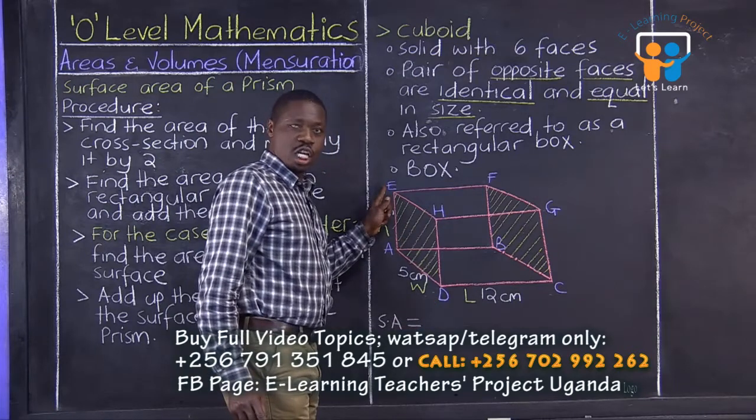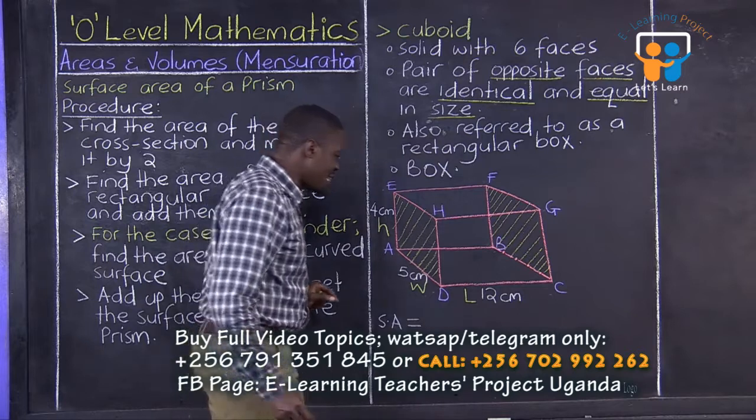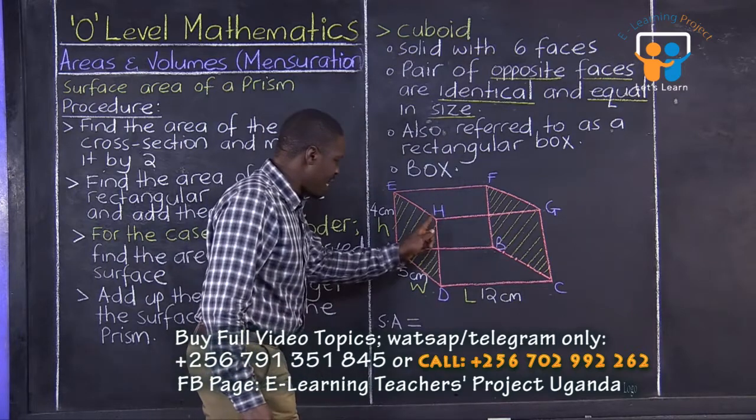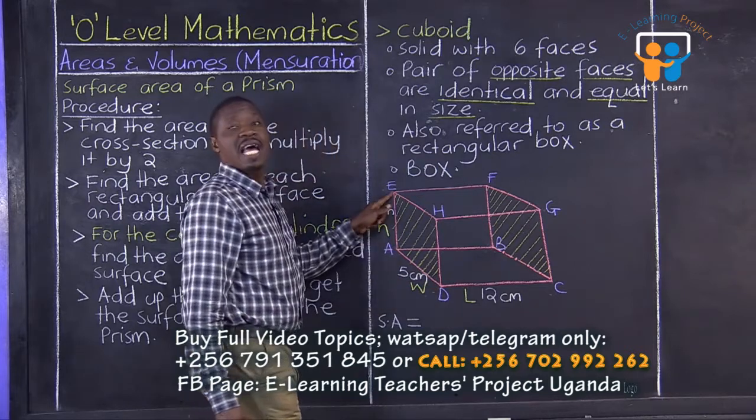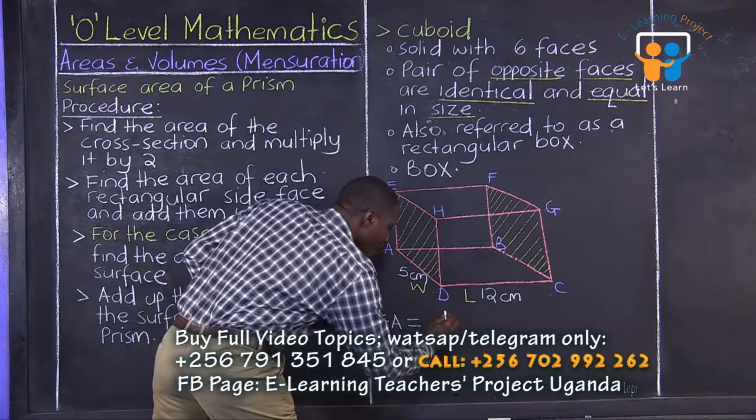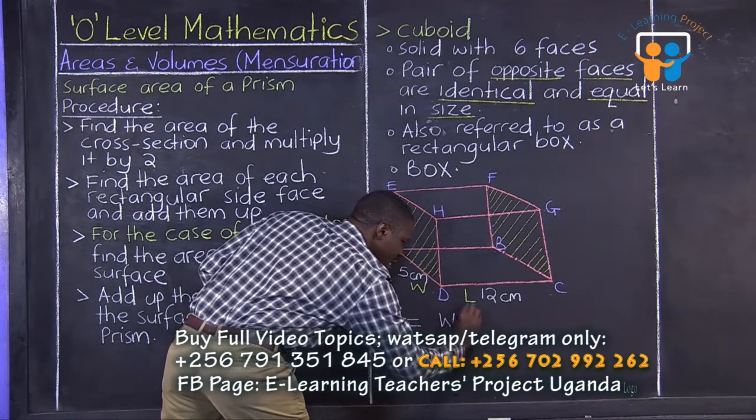D-H-E. Let us get its area. Now, its area is ADHE. Its area is width times height. So, we are having width times the height.